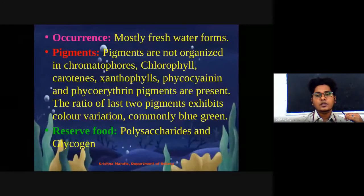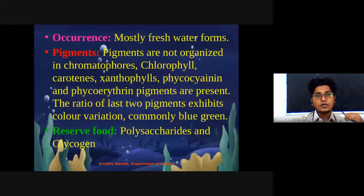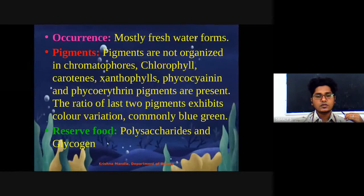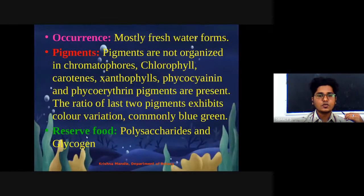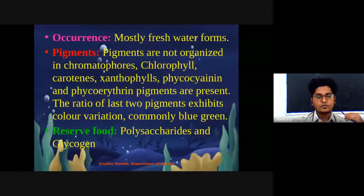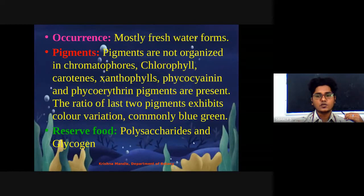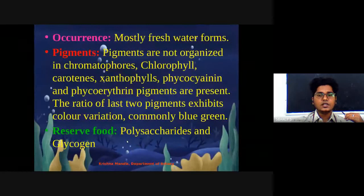The stored food material is polysaccharide and glycogen. These members store food in glycogen form, which is the most advanced form, usually found in animals. So the stored food material is in the form of polysaccharide or glycogen.